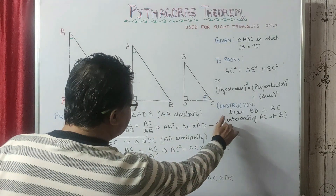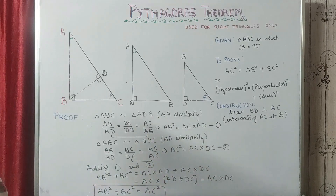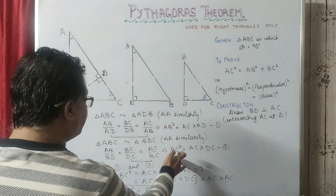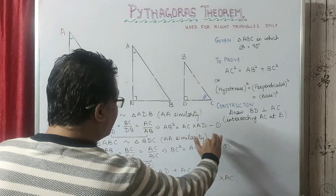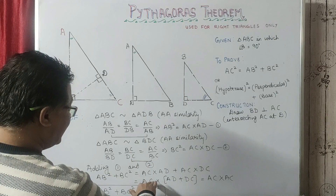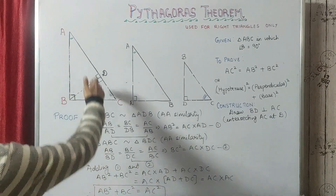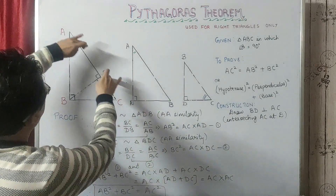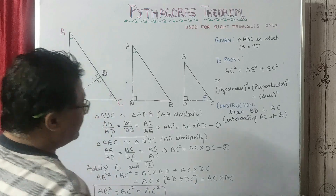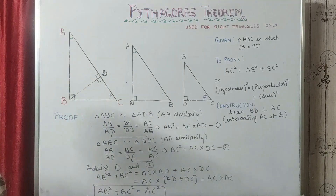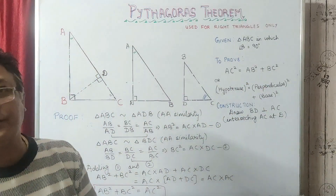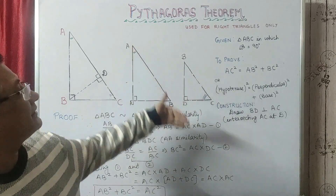Now we simply add equations 1 and 2. The left-hand sides give us AB squared plus BC squared, and the right-hand sides give us AC times AD plus AC times DC. Taking out AC as the common factor, we have AC into (AD plus DC). But AD plus DC equals AC, so we have AB squared plus BC squared equals AC into AC, which is simply AC squared. And this is exactly what we needed to prove — this is how we prove the Pythagoras theorem.